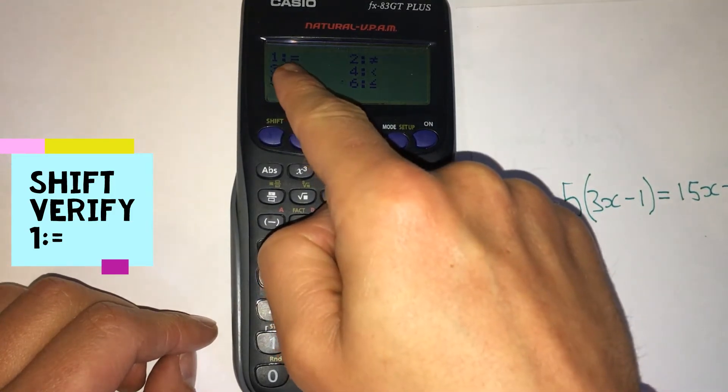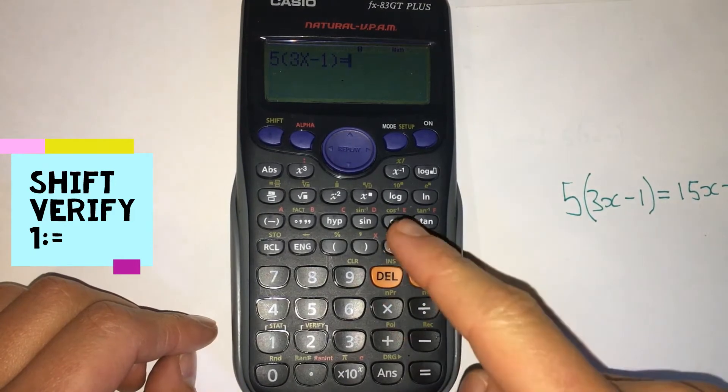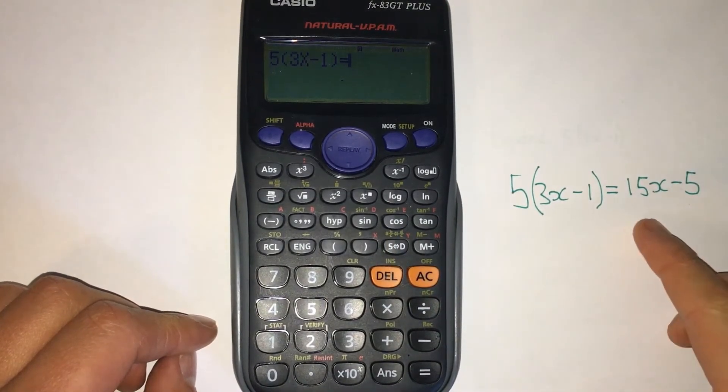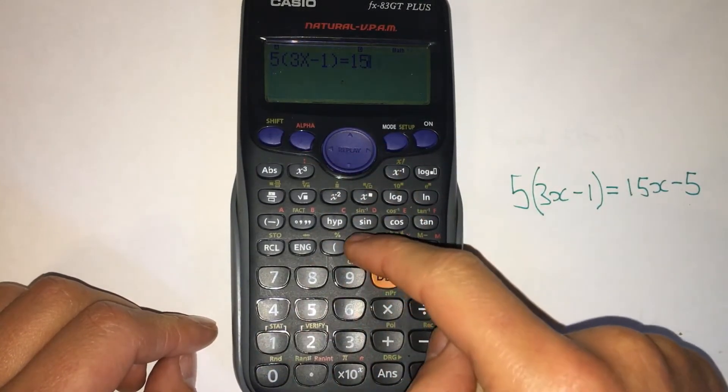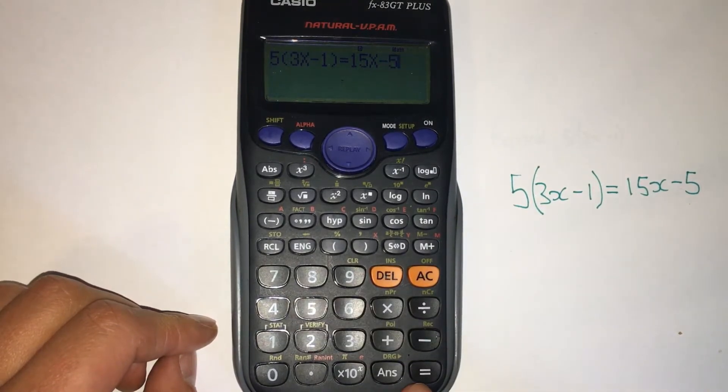We're going to use the equals sign in this little function here, so we press number one. And on the right hand side we type what we think the answer is. So we thought it was fifteen x minus five, we type that in: fifteen, the alpha function to get the x, minus five.